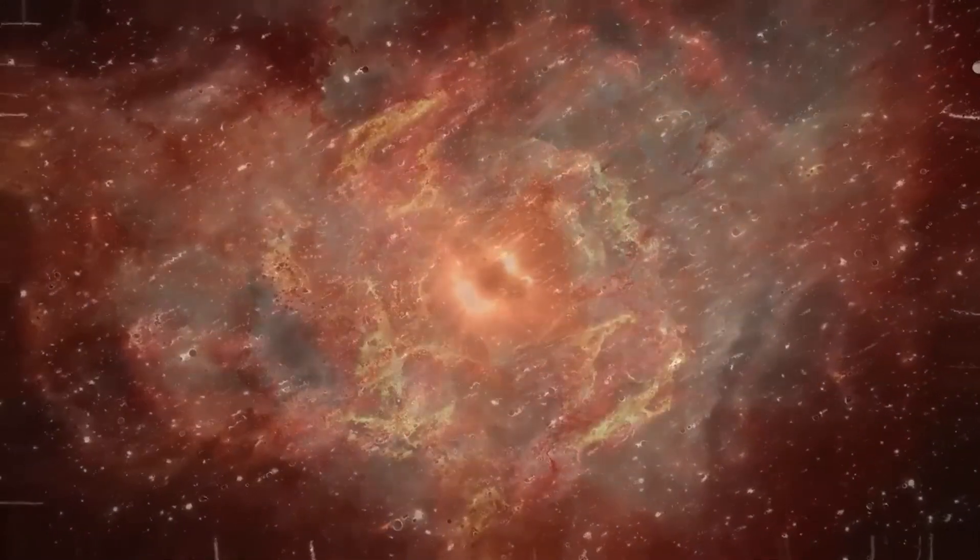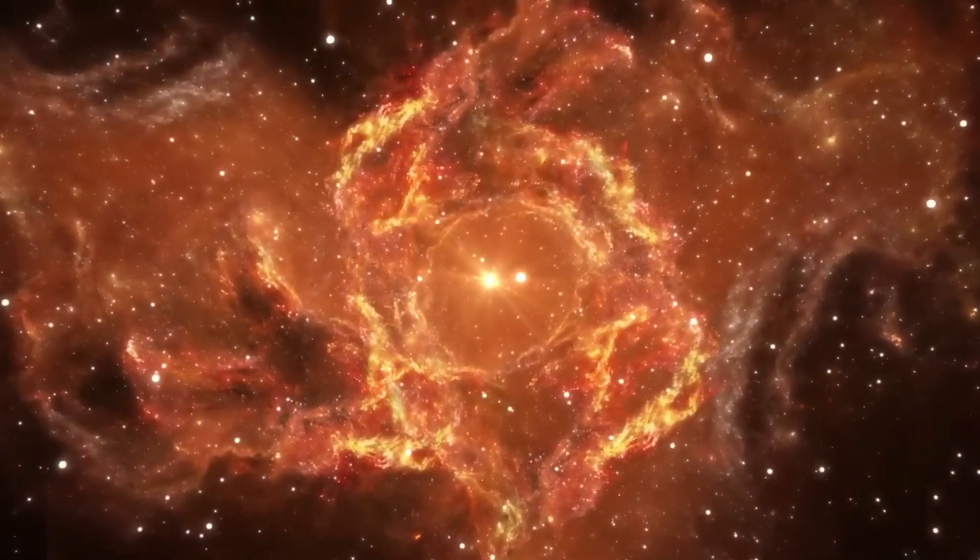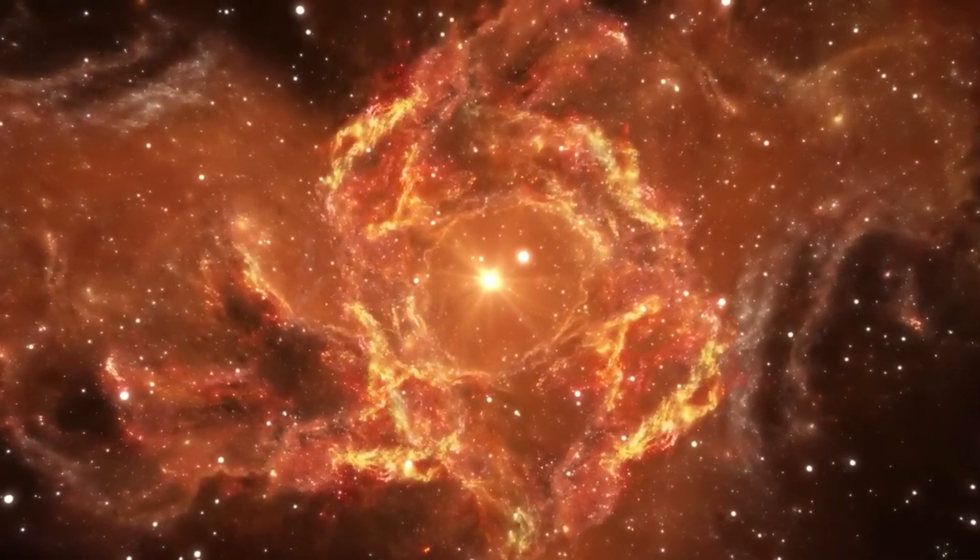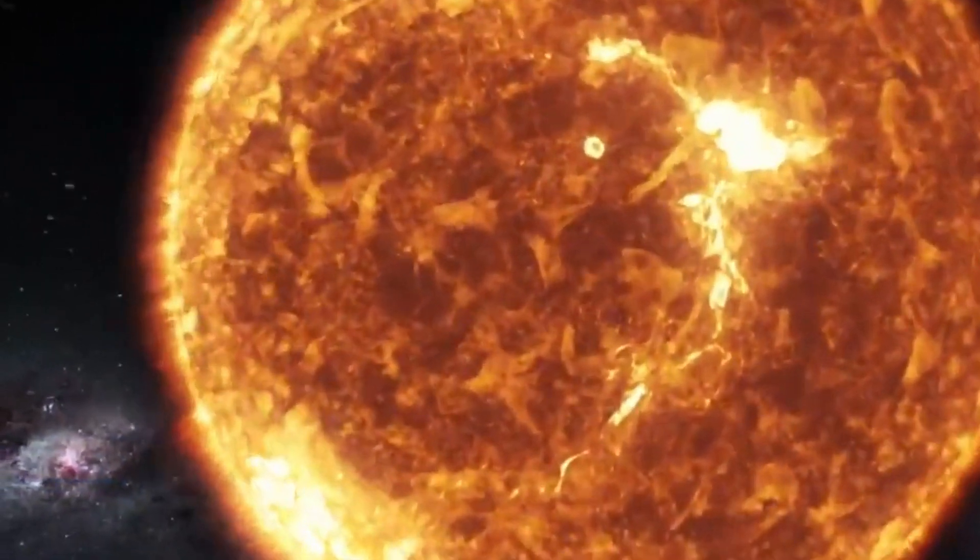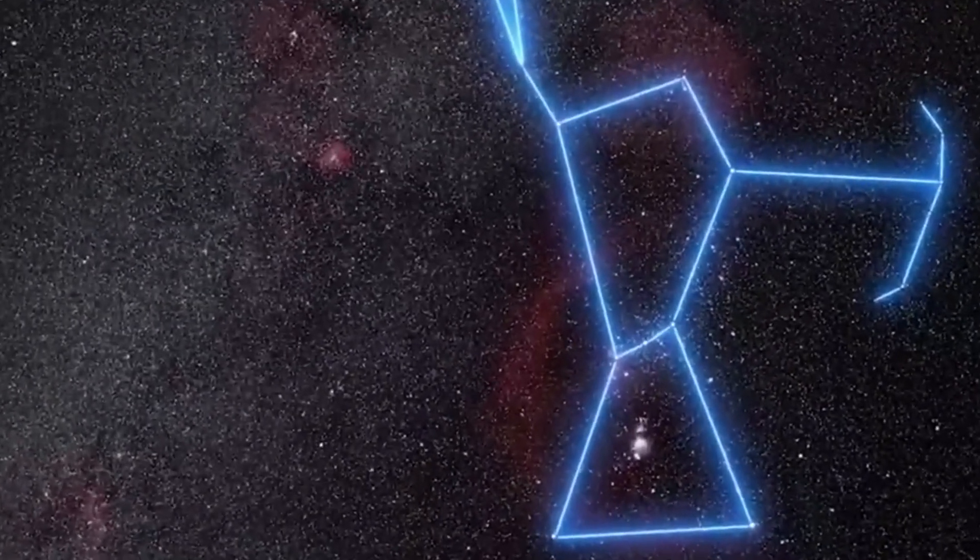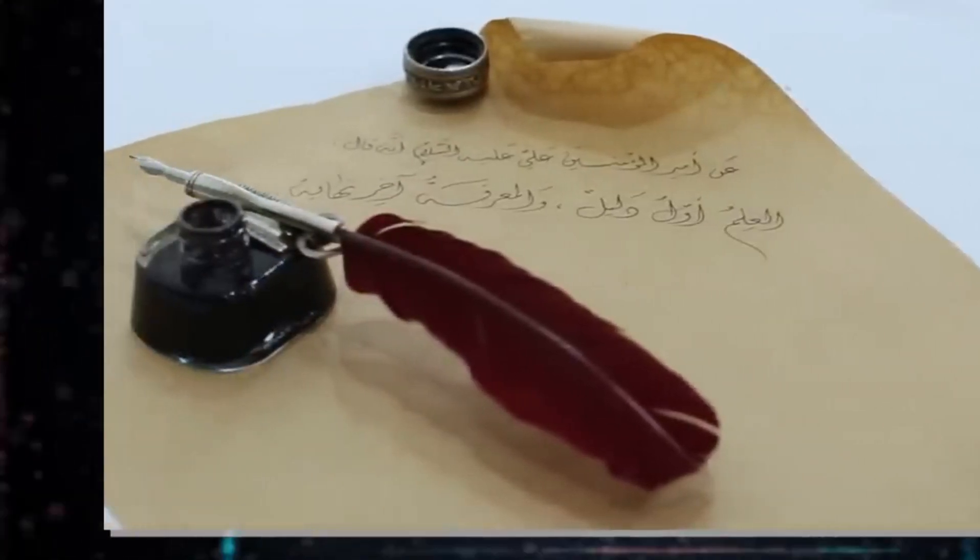The images from these telescopes show that Betelgeuse differs significantly from our sun's appearance. Instead of being a smooth and uniform sphere of extremely hot plasma, Betelgeuse appears as a collection of uneven boiling gas pockets, with some being quite sizable, comparable to small stars.